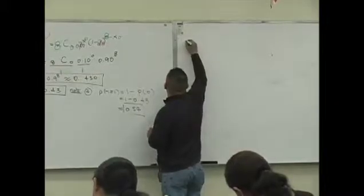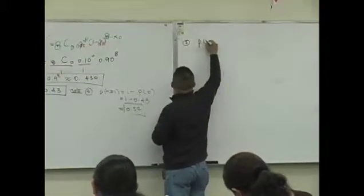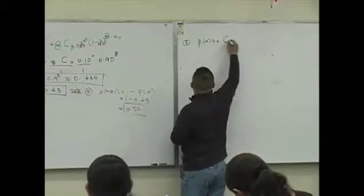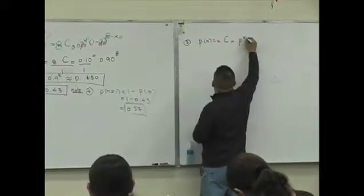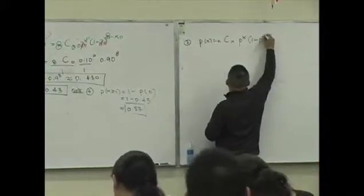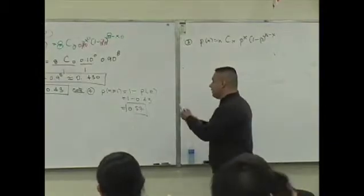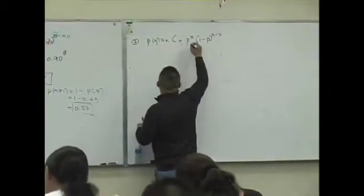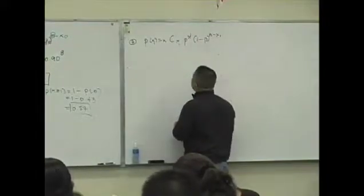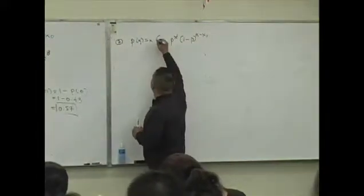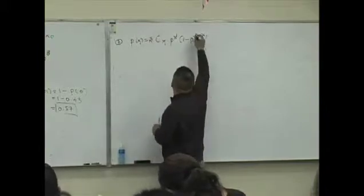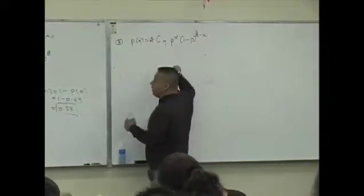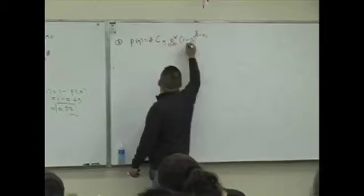Question two: P of X is nCx times p to the x times 1 minus p to the n minus x. In this problem, this time x is 1. n is still 8. p, the probability of success, is still 0.10.